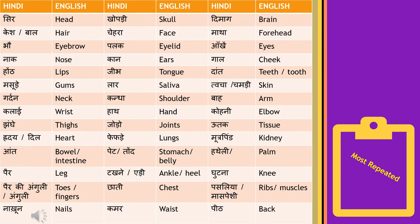'Gurdhan' means neck, 'kandha' means shoulder, 'bhaya' means arm. 'Kalai' means wrist, 'haath' matlab hand. 'Koni' means elbow. 'Jhange' means thighs. 'Jodo' means joints in your body.